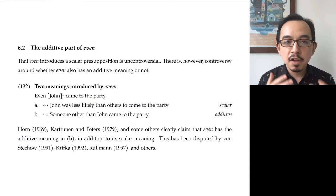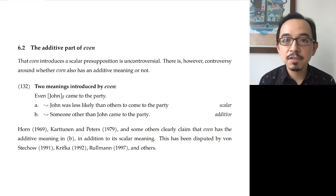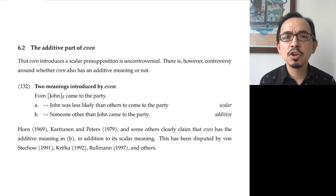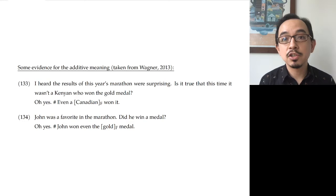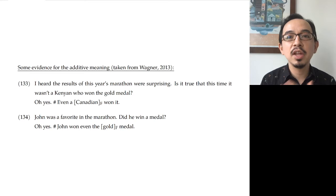A number of earlier authors have stated that there is an additive component to the meaning of even in addition to the scalar component. But subsequent authors have shown there are compelling examples suggesting there couldn't generally be an additive part. My favorite paper in this literature is an unpublished manuscript by Michael Wagner, which does a really good job digesting this literature and sorting through different kinds of examples to see where you feel you have an additive part and when you don't.